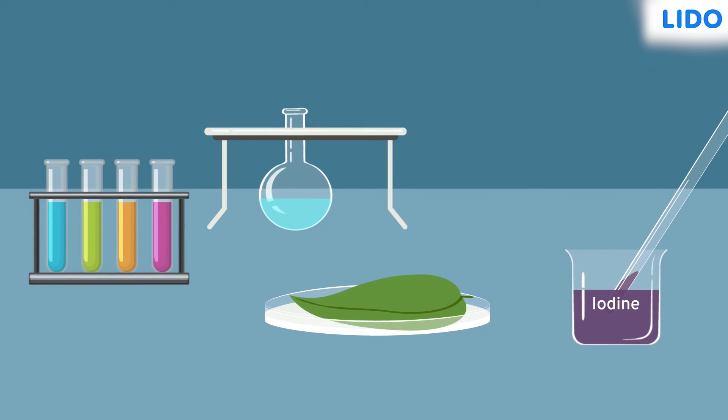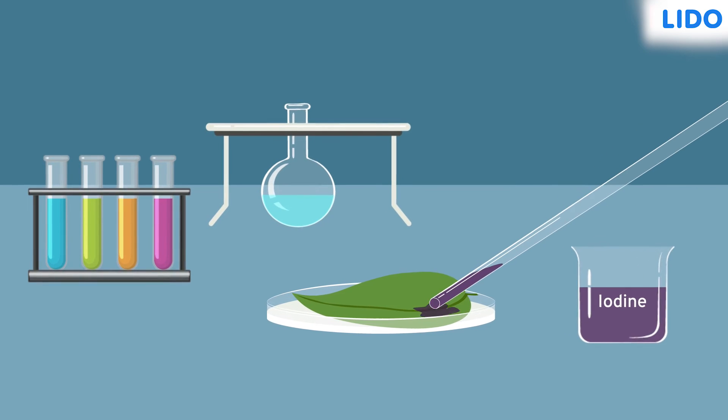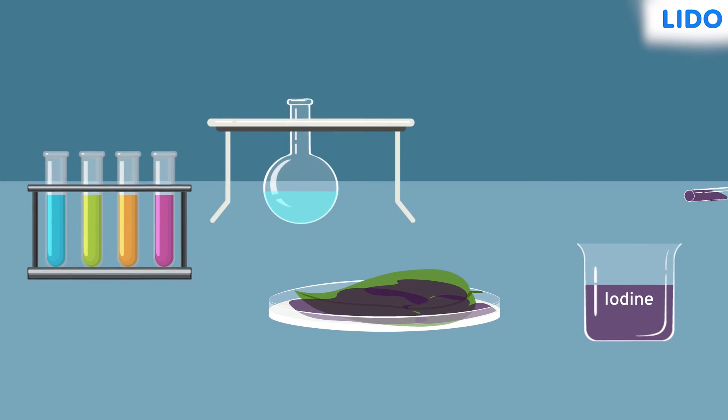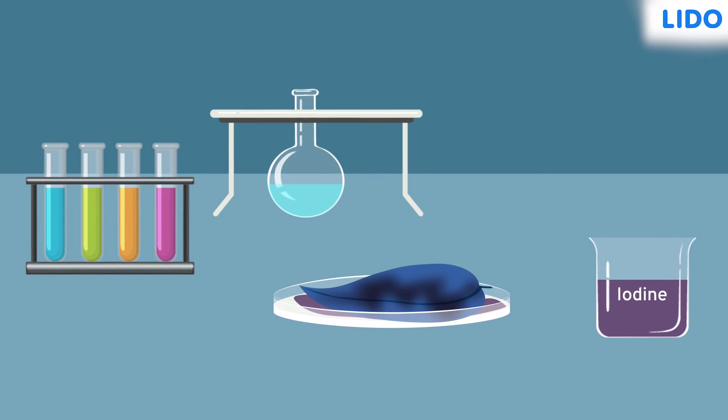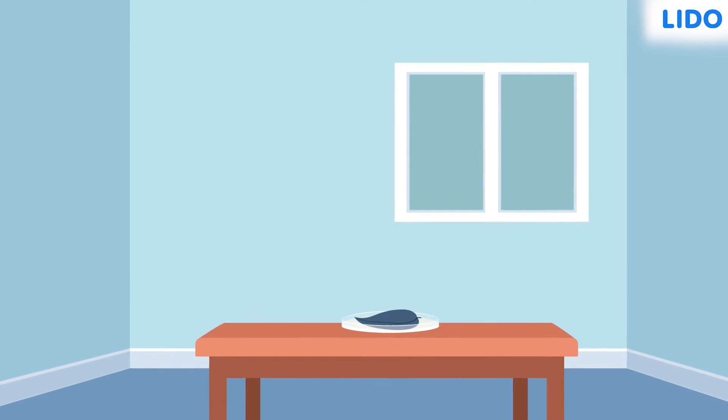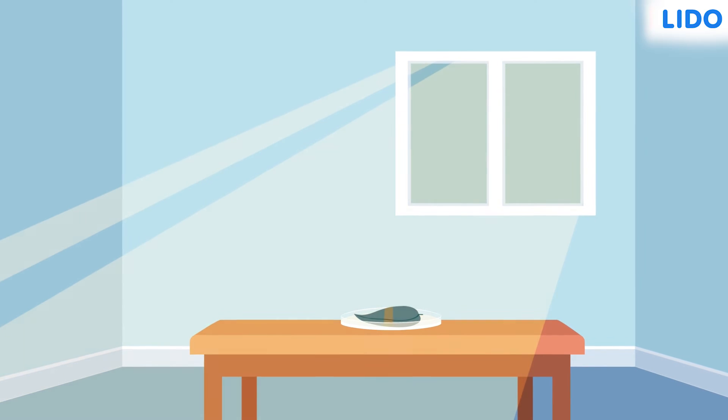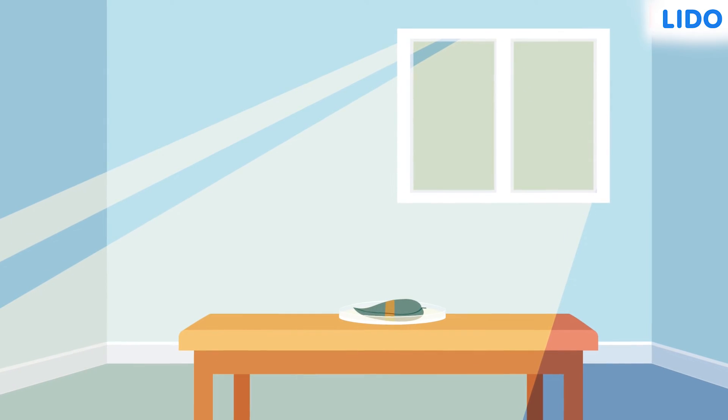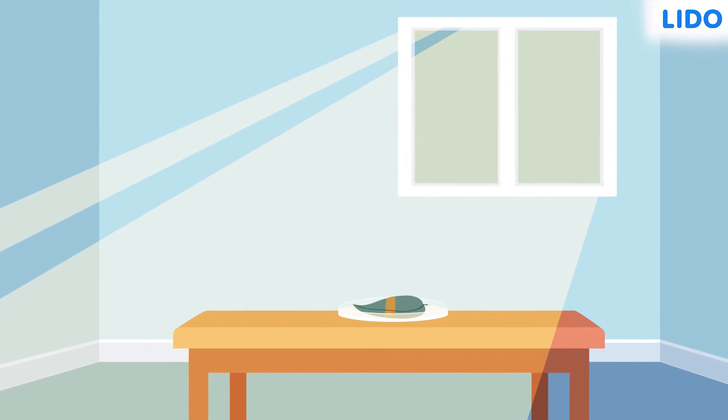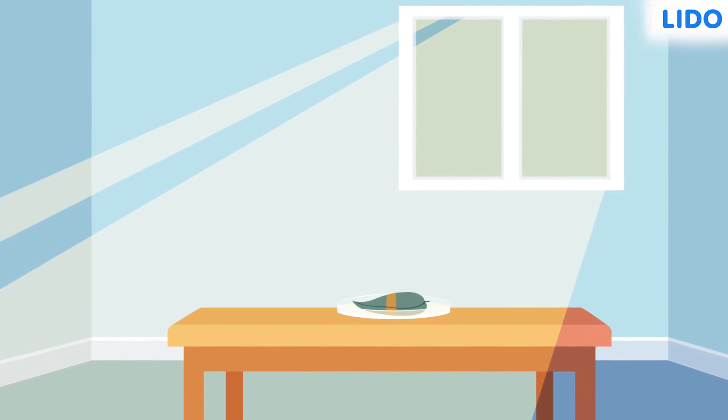Then, she repeated the test for starch on the leaf. But when she put the iodine solution on the leaf, only the uncovered portion of the leaf became blue-black. The covered portion remained pale because in the absence of sunlight, photosynthesis could not take place. Hence, no starch was formed.